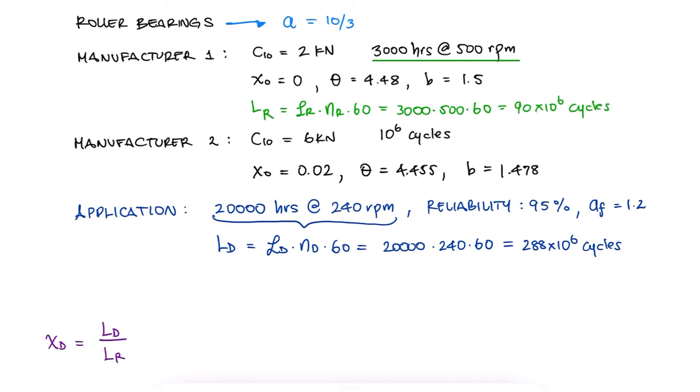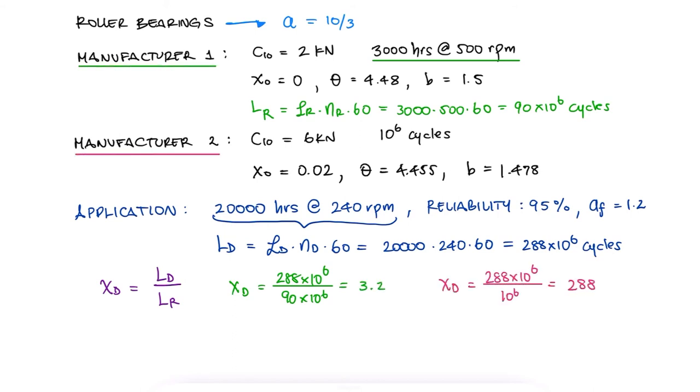The life for the bearings of manufacturer 2 is given as 1 million cycles. Therefore, the dimensionless multiple of rating life XD is 3.2 for manufacturer 1 and 288 for manufacturer 2.